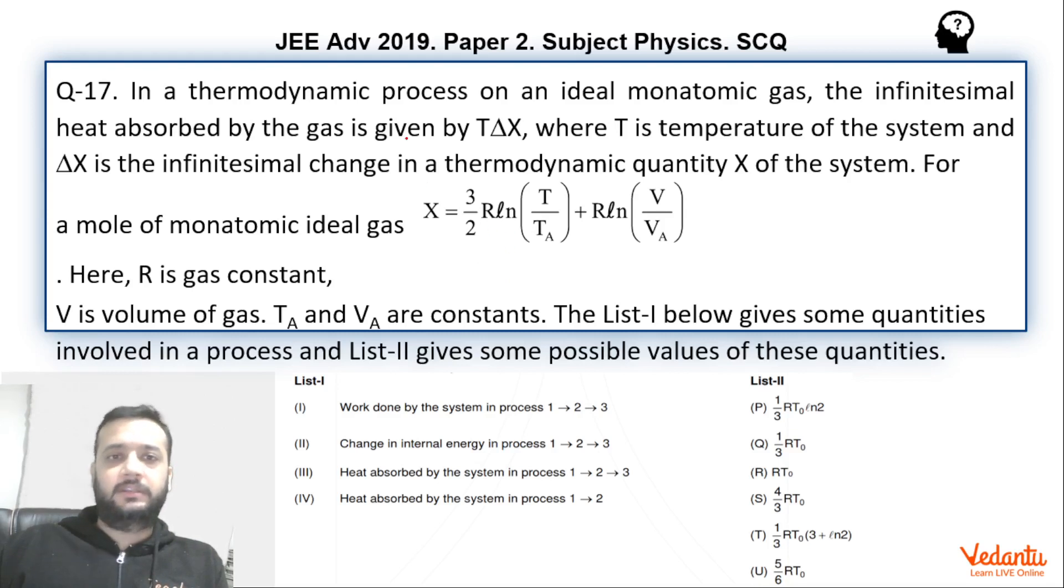So what's happening over here, there is an ideal monatomic gas for which we have taken only one mole. We are defining a thermodynamic quantity X, whose value has been given 3/2 R ln(T/Ta) plus R ln(V/Va). T and V are the instantaneous temperatures and volumes. Ta and Va are some constants.